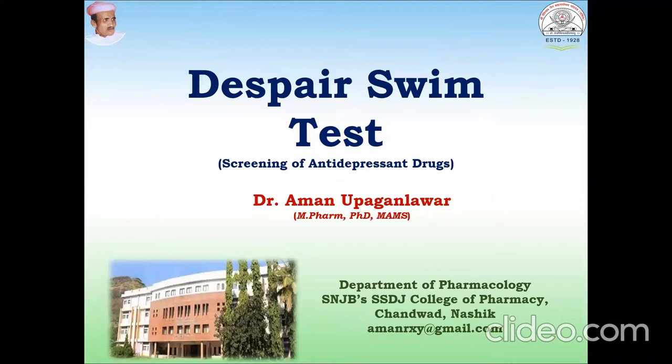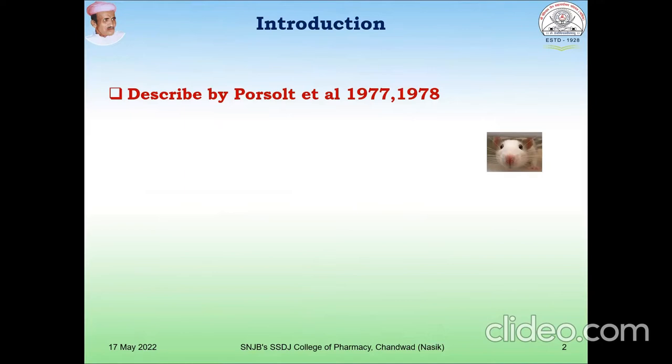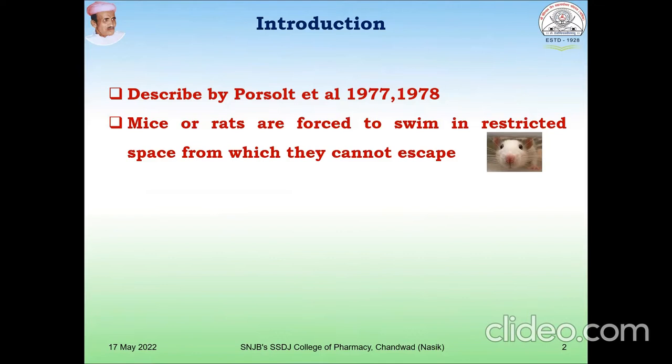Hello friends, today we are going to discuss one method for screening of antidepressant activity in the drug, that is the despair swim test. Now what is this test? Let's see. It was first described by Porcel et al in 1977 and 1978.